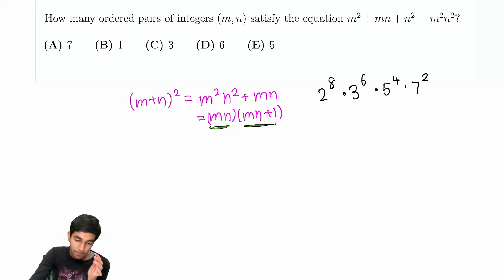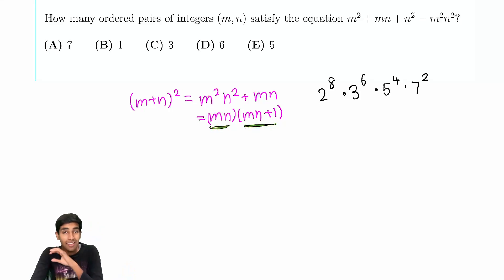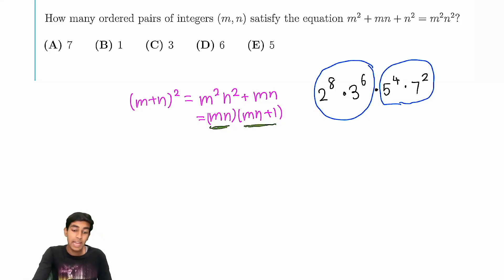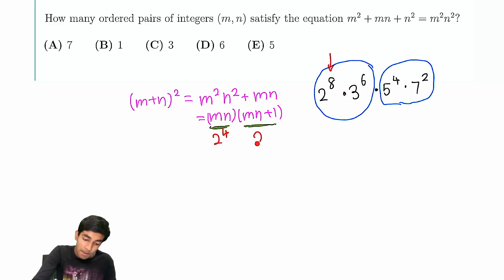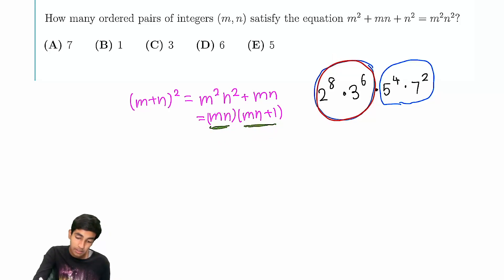Since mn and mn+1 are relatively prime, when we assign prime factors from (m+n)², each prime factor goes exclusively to one or the other — they must occupy completely different prime factors. For example, it's not possible for both mn and mn+1 to share a factor like 2⁴, because they differ by 1 and can't both be multiples of 16.